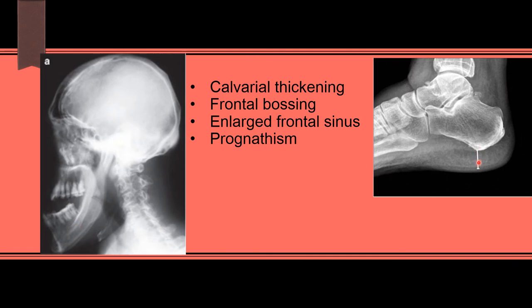Another important feature is heel pad thickness, which is increased in acromegaly. Basically there is soft tissue thickening everywhere, so increased heel pad thickness is more than 25 millimeters. Also remember that there might be joint space widening and not narrowing in acromegaly. These are the important features of acromegaly.